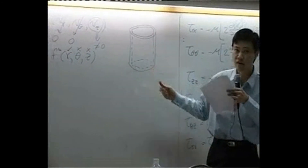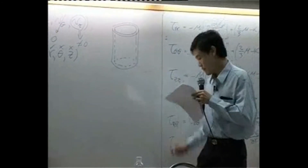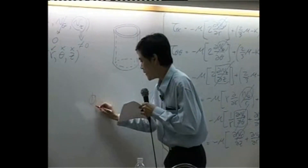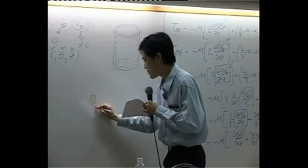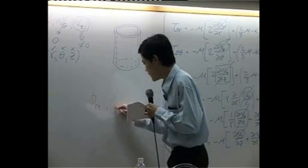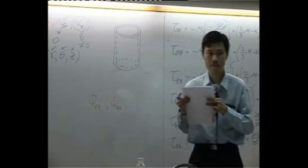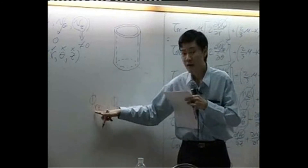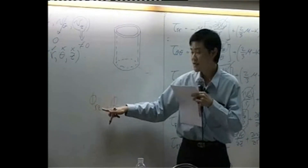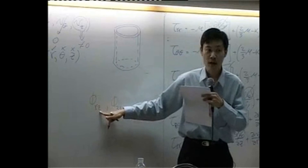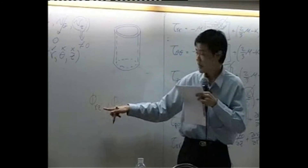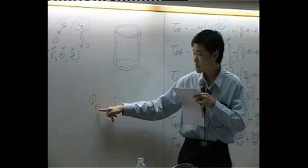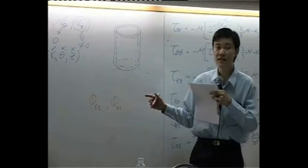We say that right now we have VRZ and VCZ which are not zero. VRZ is the Z-momentum transfer in the R-direction, so the momentum is transferred in the R-direction.